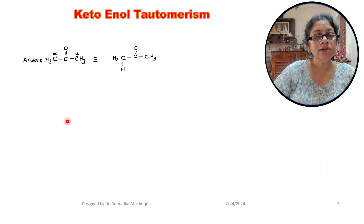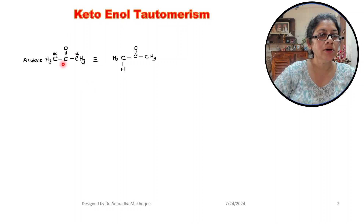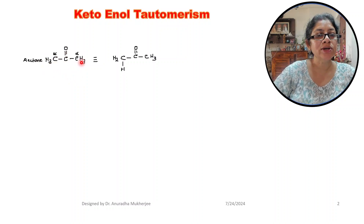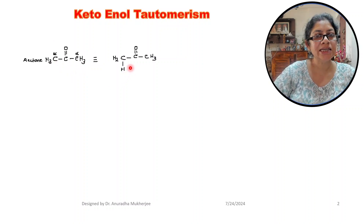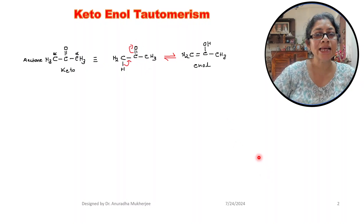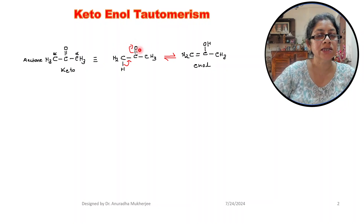Keto-enol tautomerism is a characteristic tautomerism which takes place for the carbonyl type of compound. Here we have taken acetone — the carbonyl group is attached with two alpha carbons, so it has alpha hydrogens also. Alpha hydrogen is acidic in nature because the carbonyl group is an electron withdrawing group, and this acidic proton undergoes keto-enol tautomerism.